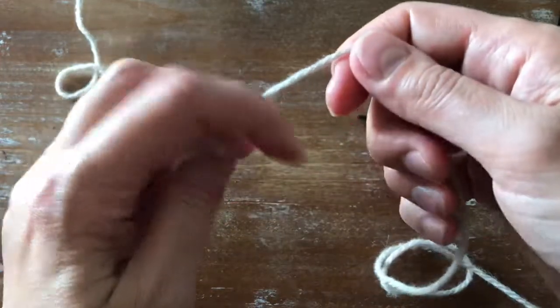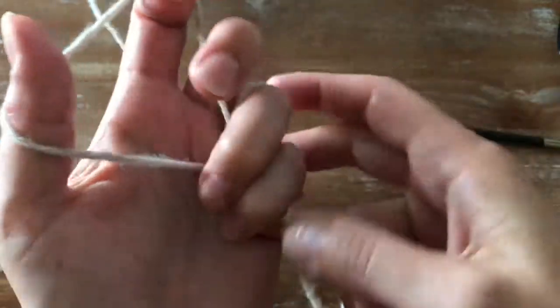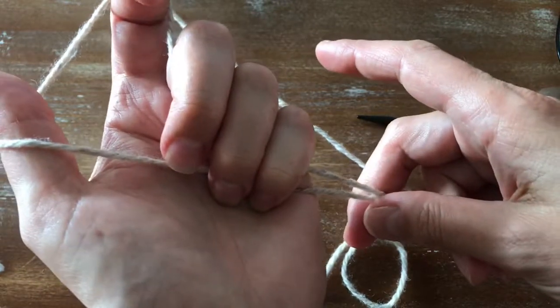Now place the tail over your thumb and the other side over your index finger, and hold both strands of yarn with the bottom fingers.